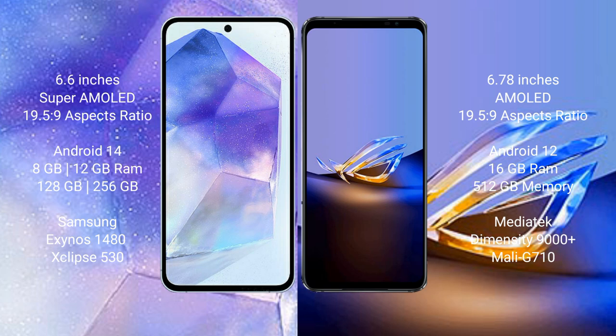The Samsung Galaxy A55 runs on the Android 14 operating system. The Asus ROG Phone 6D Ultimate runs on the Android 12 operating system. The Samsung Galaxy A55 comes with 8GB or 12GB RAM and 128GB or 256GB internal storage.